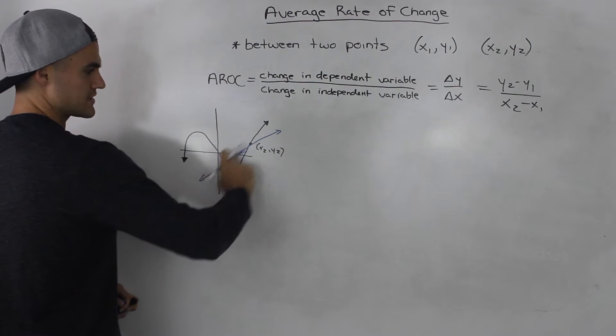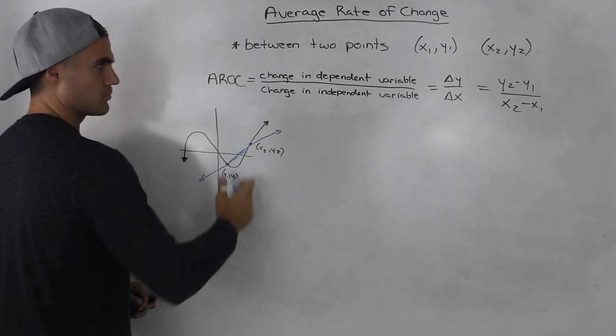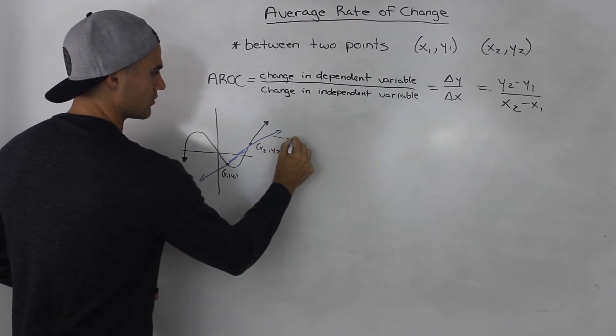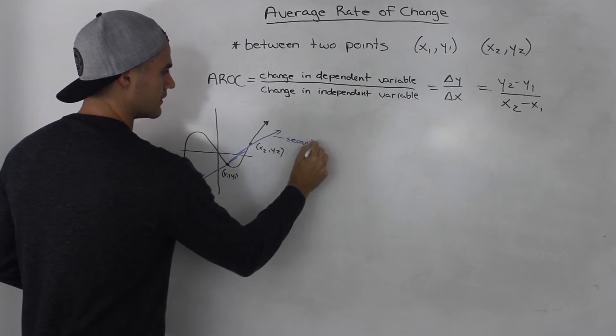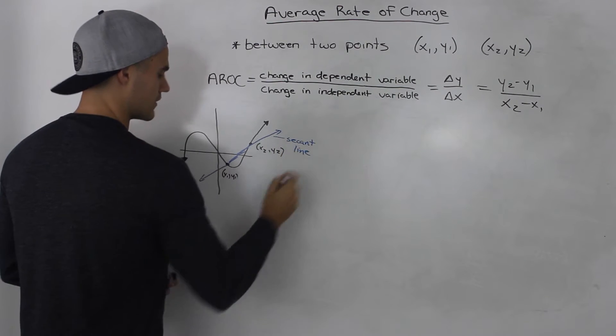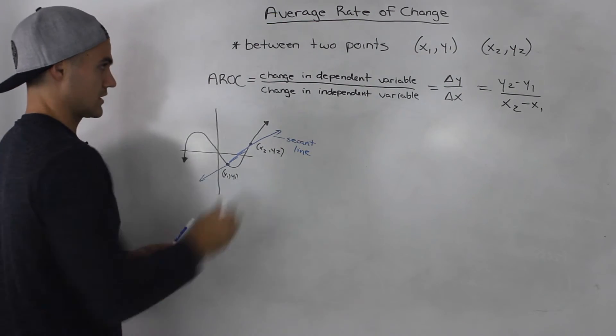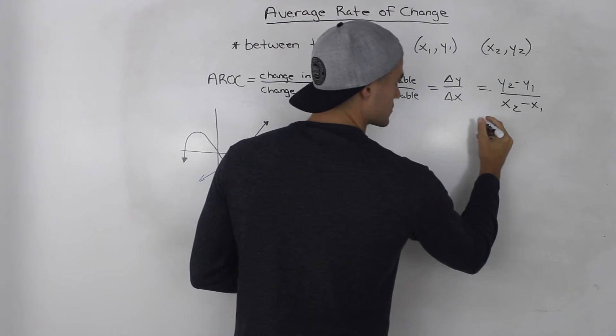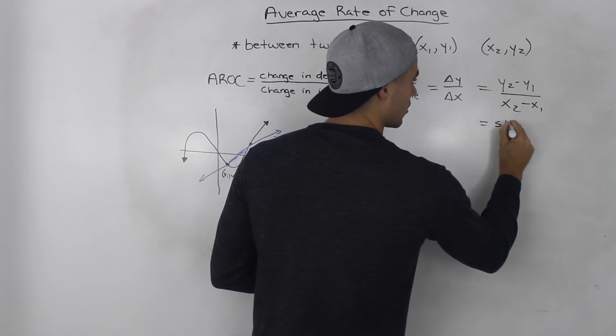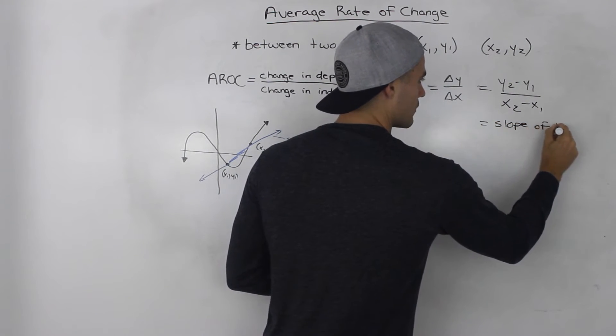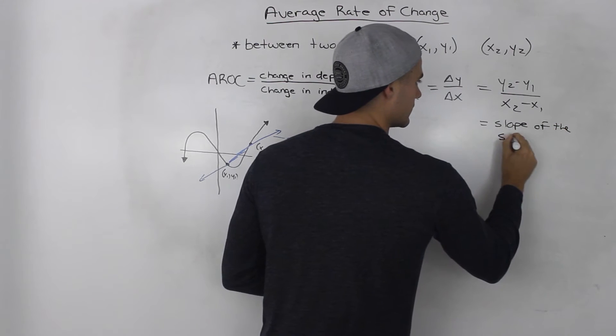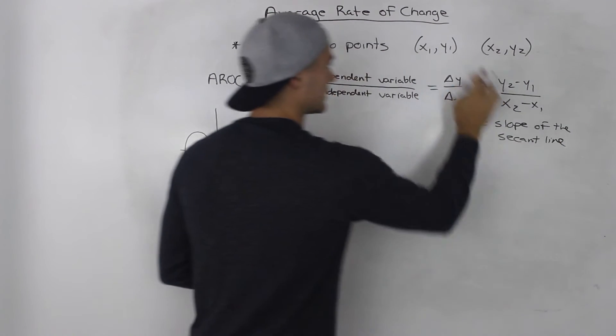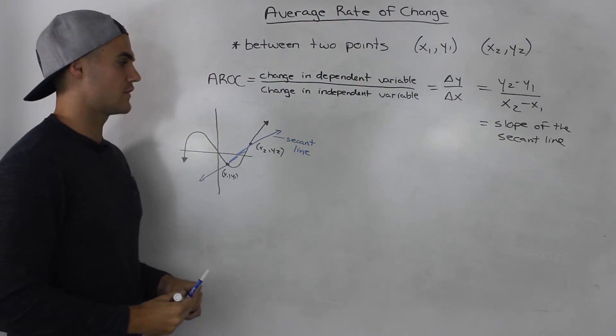The slope of this line between those two points would give us the average rate of change. And this line here is actually called the secant line. Another thing you can add is the average rate of change is also equal to the slope of the secant line, and the secant line is always between two points on a function.